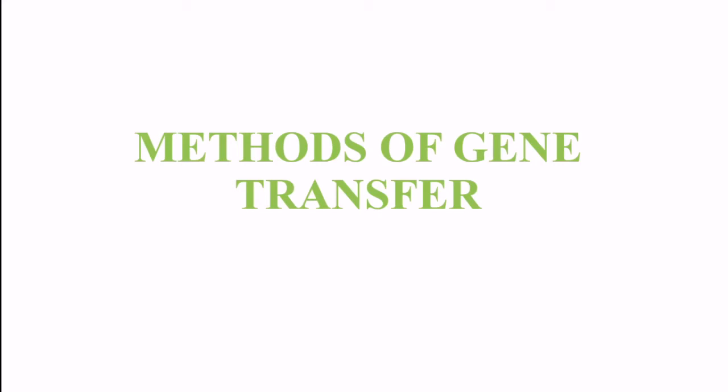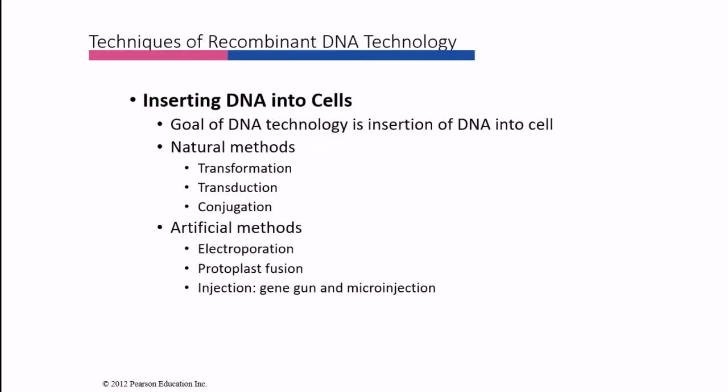Techniques of recombinant DNA technology: the recombinant DNA can be inserted into cells naturally in bacteria through transformation, transduction, or conjugation. Next are artificial methods - the three important ones are electroporation which requires voltage, protoplast fusion which requires PEG, and microinjection and gene gun.